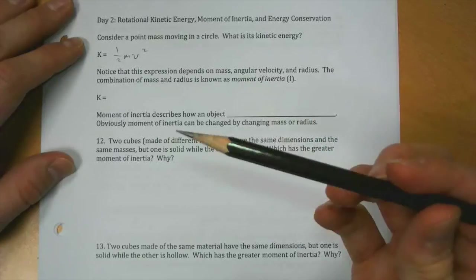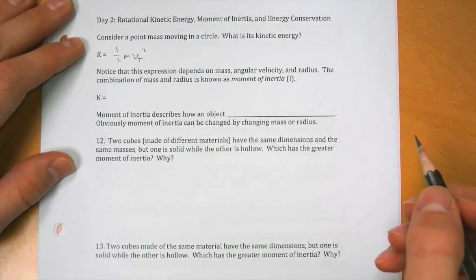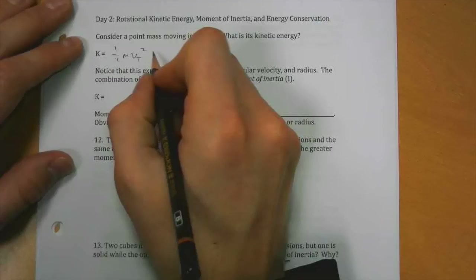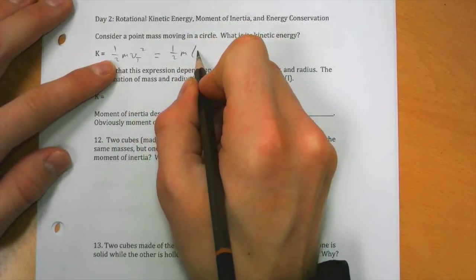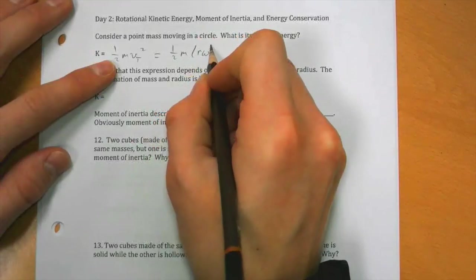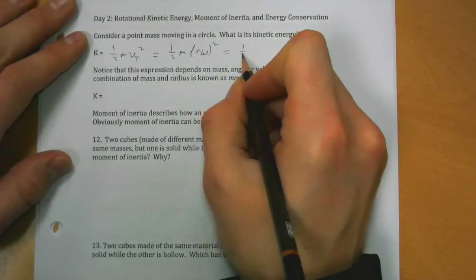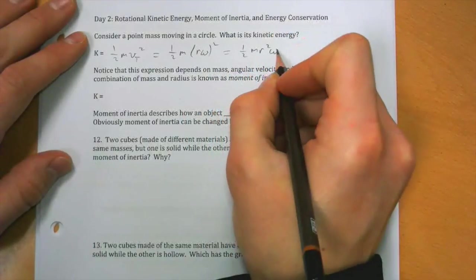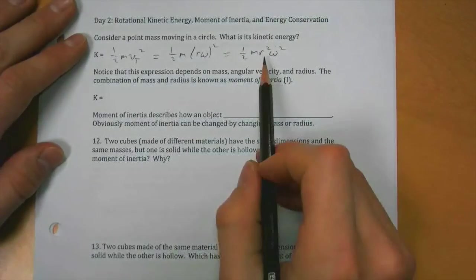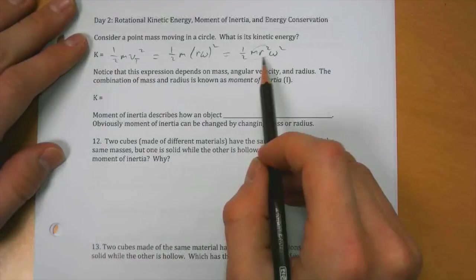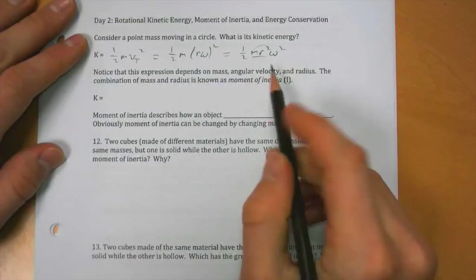If it's moving in a circle, then this is a tangential velocity which means we can rewrite it. Tangential velocity is equal to r omega. So then we can write its kinetic energy as one-half mr squared omega squared. Now this is for a single point mass.